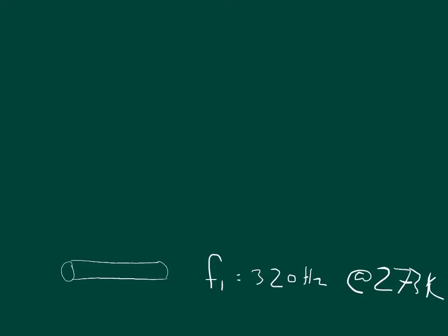And we want to know what the length of the pipe is, so we can use the equation for the fundamental frequency of a pipe open at both ends, which is the frequency is equal to n times the velocity over 2 times the length of the pipe. And so if n equals 1, we can just mark it out, so F1 is equal to V over 2L.